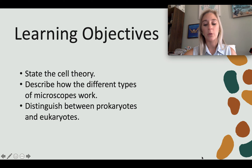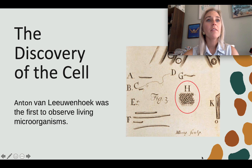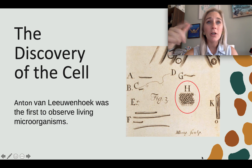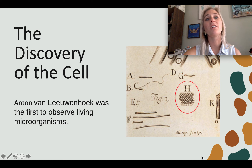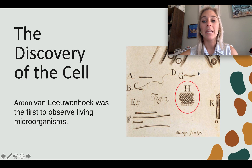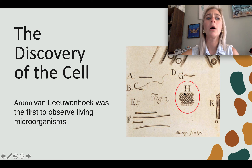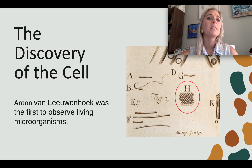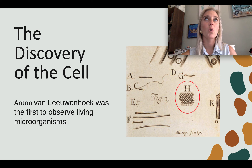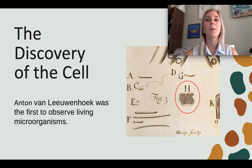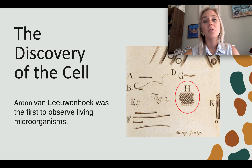The first microscopes were made in the 1500s by eyeglass makers in Europe. Robert Hooke looked at slices of cork in 1665 and saw something very similar to what's drawn in this image. Hooke called these structures 'cells,' a term we still use today. He named them because they looked like the little rooms in a monastery, which were called cells.